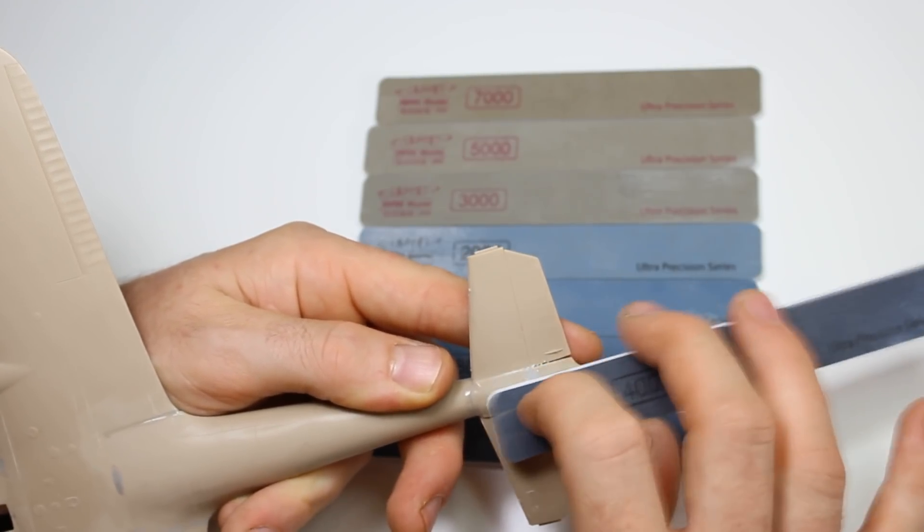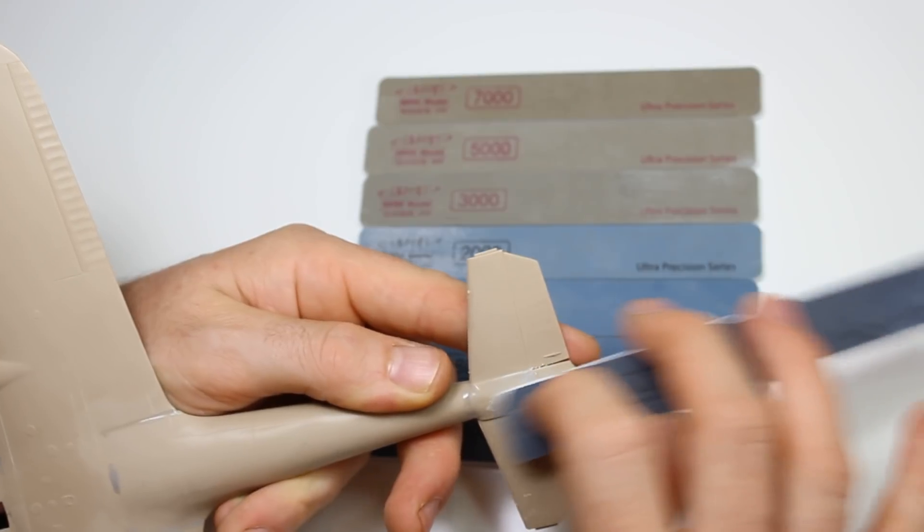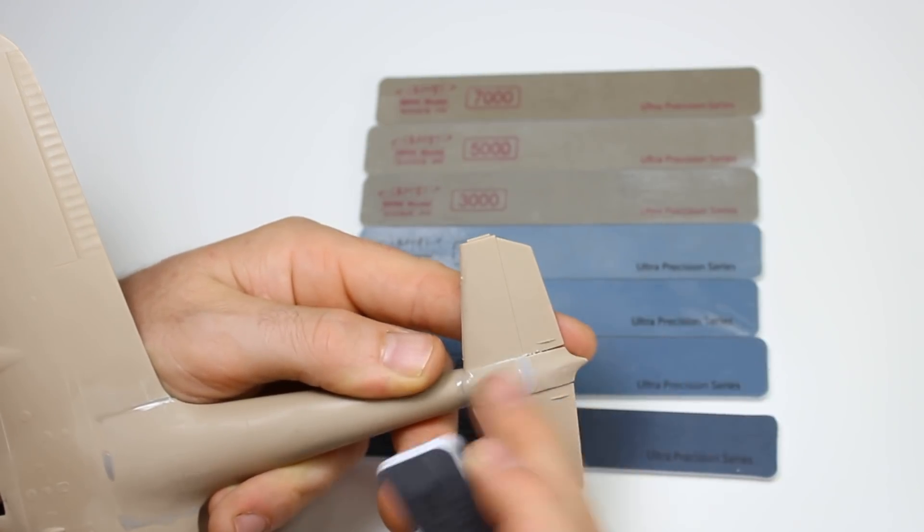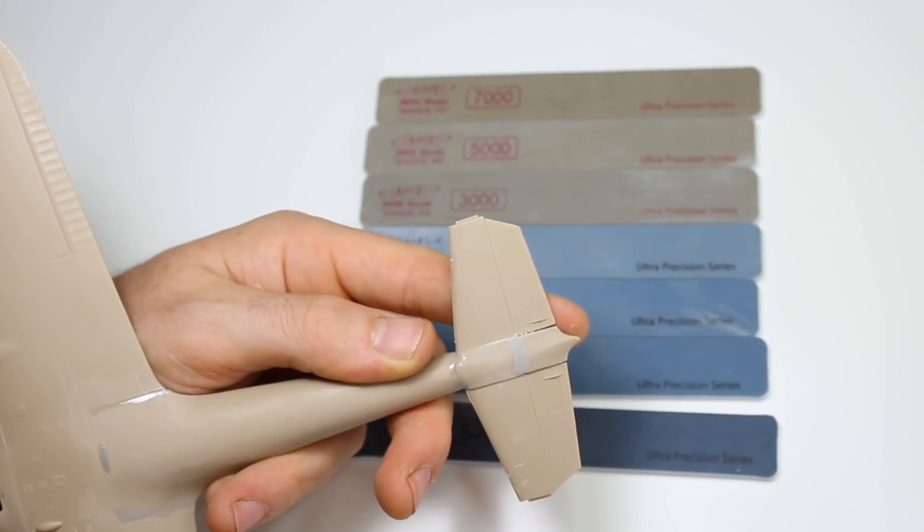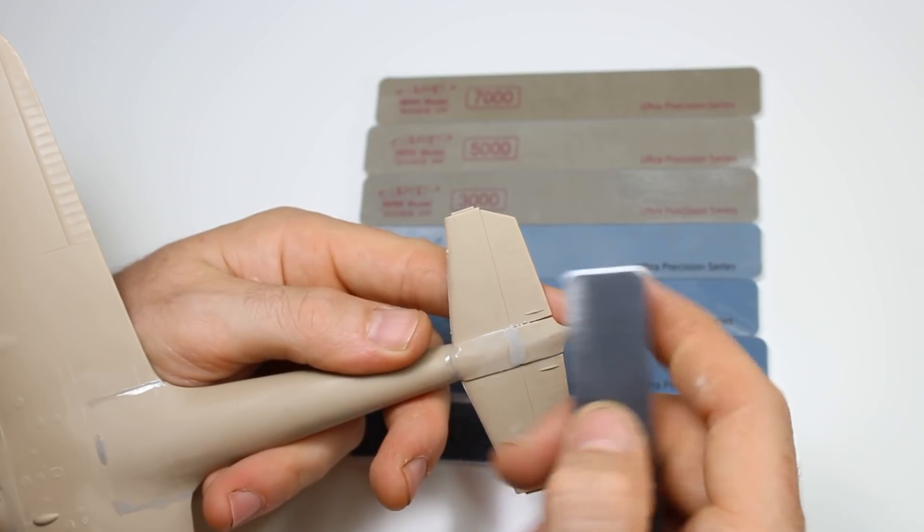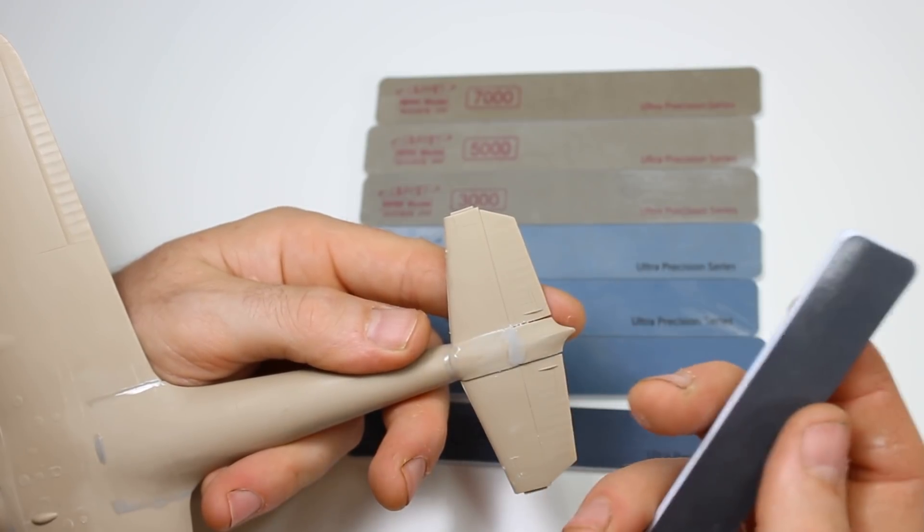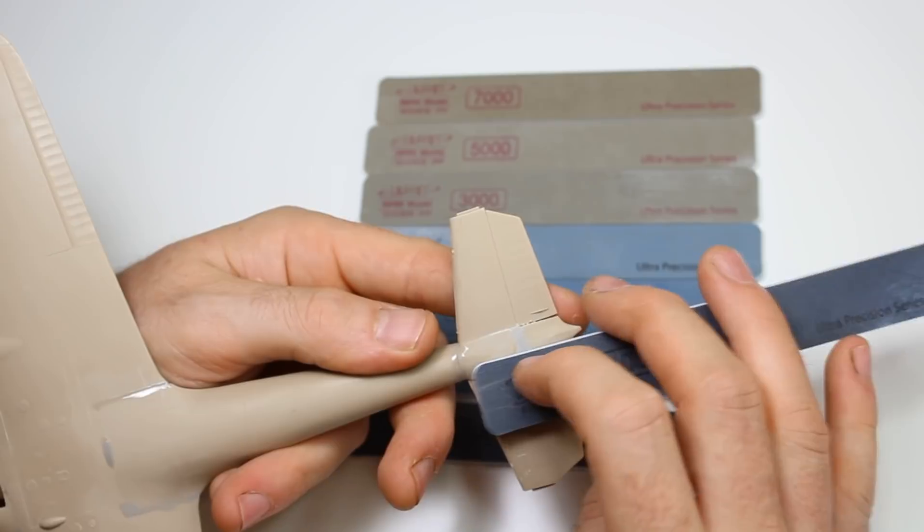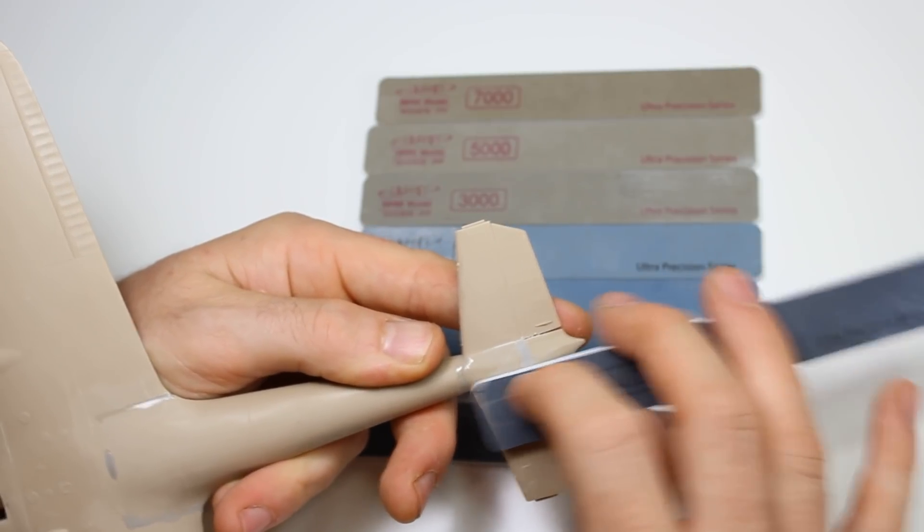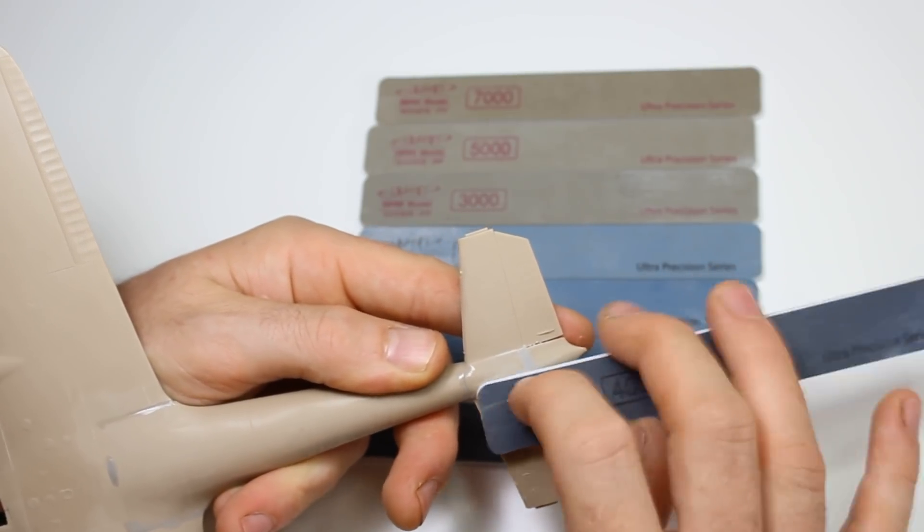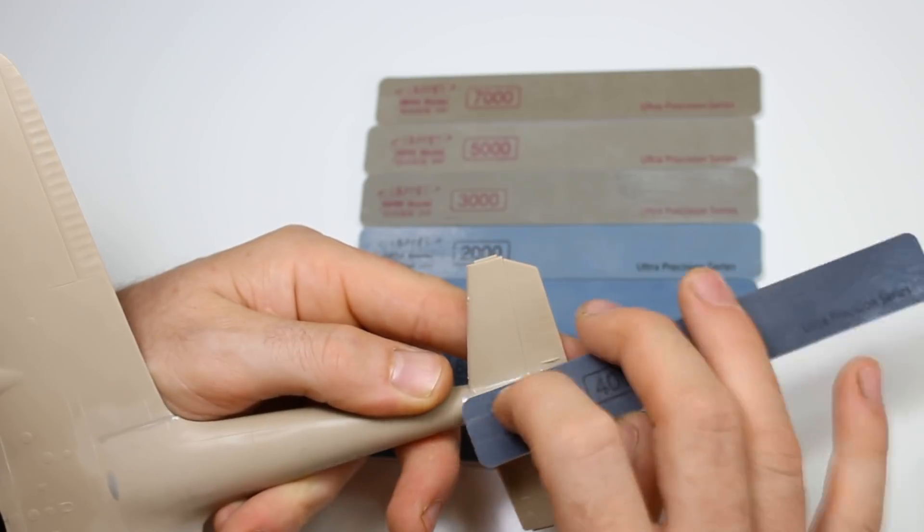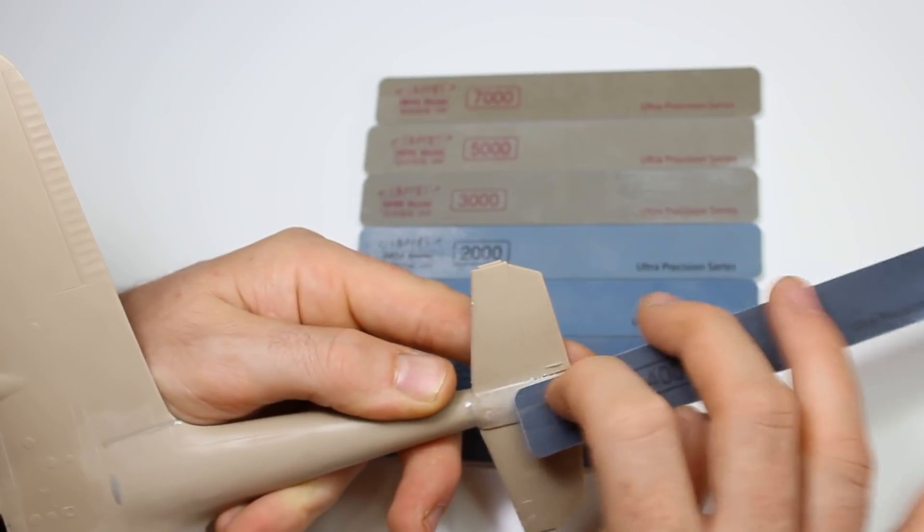One thing I will say, I've used all the main competitors in the sanding stick range. You've got Florey sanders and you've got UMP sanders, the ultimate modelling products. There's also the Squadron ones. There's a whole load of stuff. There's even nail files as well. I've used a whole lot.